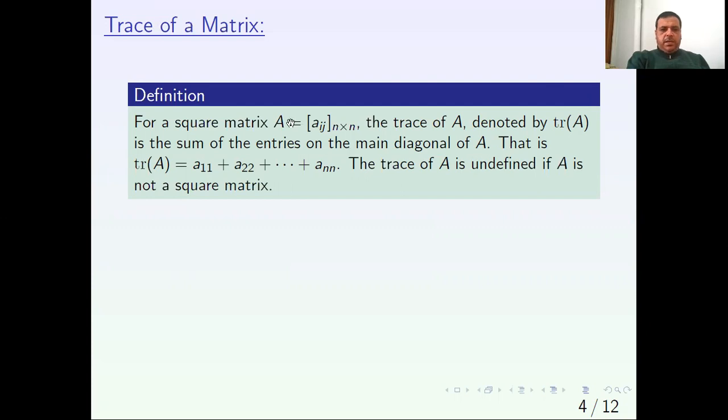That is, if A equals aij sub n cross n, then trace of A equals a sub 1,1 plus a sub 2,2 plus et cetera plus a sub n,n. The trace of A is undefined or not defined if A is not a square matrix.